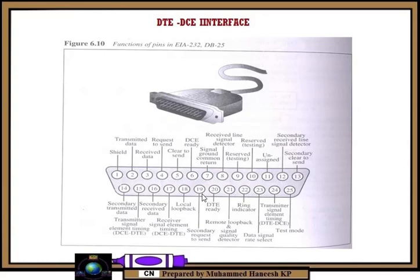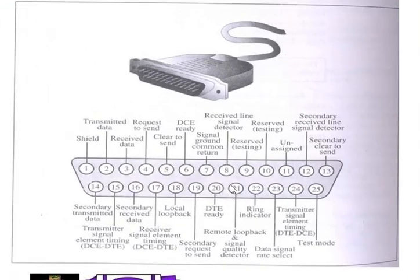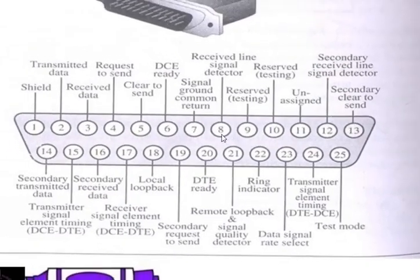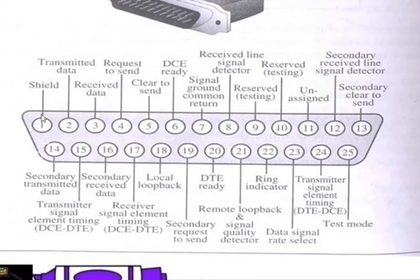Now I will explain the functions of pins in EIA-232. Pin number one is for shield. Pin number two for transmitter data. Pin number three for receive data. Pin number four for request to send. Pin number five for clear to send. Pin number six for DCE ready. Pin number seven for signal ground — common return. Pin number eight is received line signal detector. Pin number nine is reserved for testing. Pin number ten is reserved for testing.